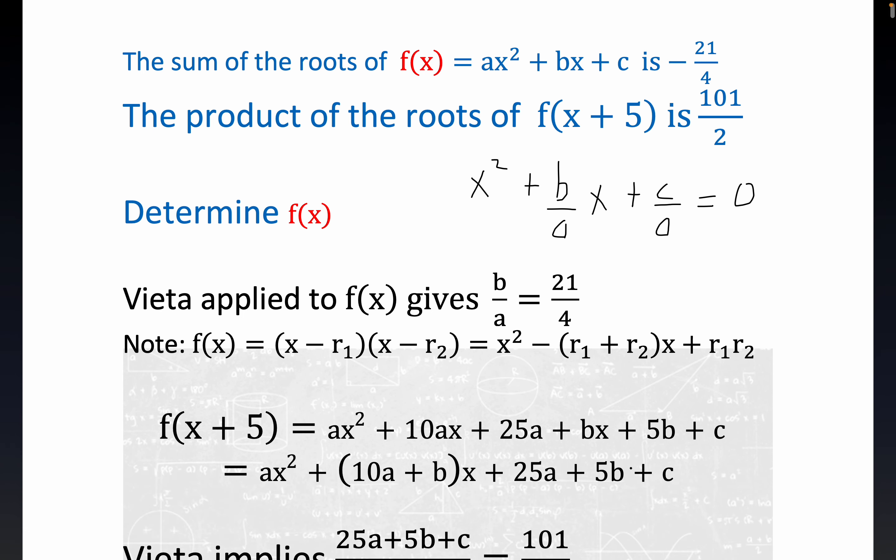I did F of X plus 5 for you. And we got this piece right here as your constant term now. 25A plus 5B plus C is your new constant term in this scenario.